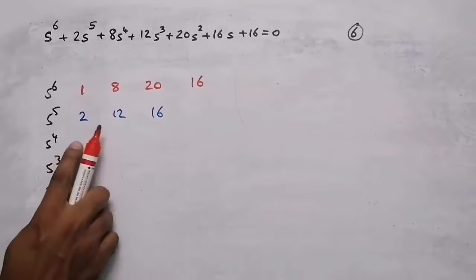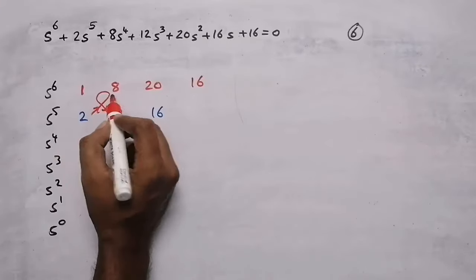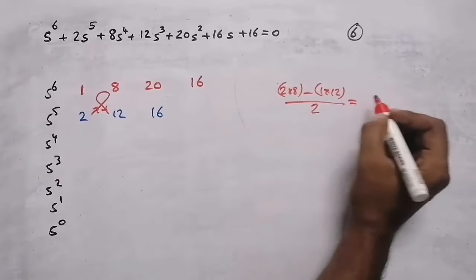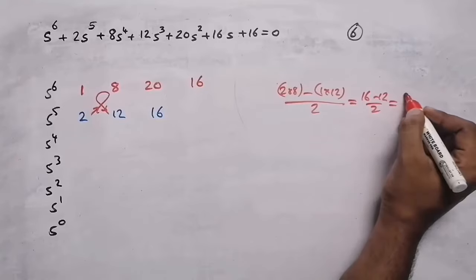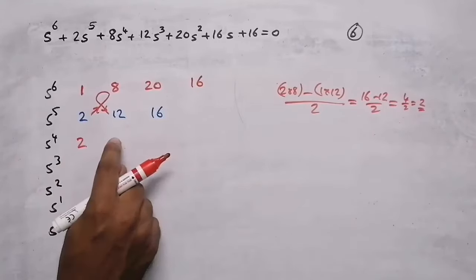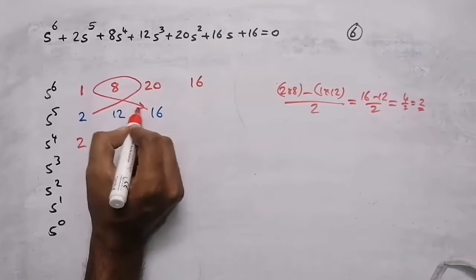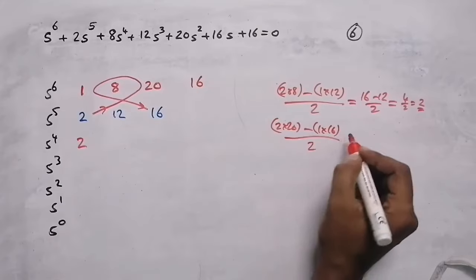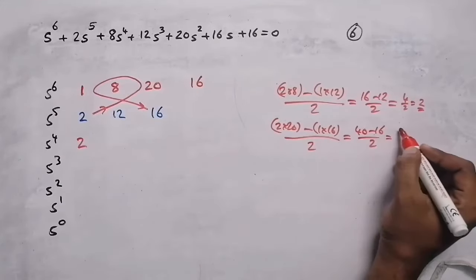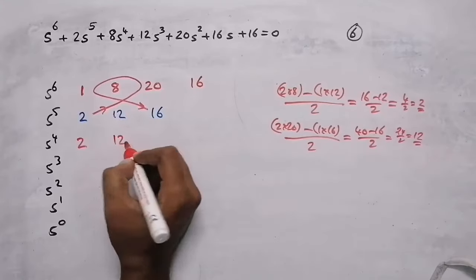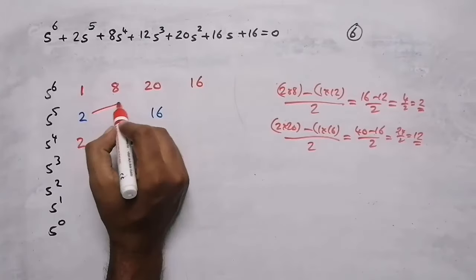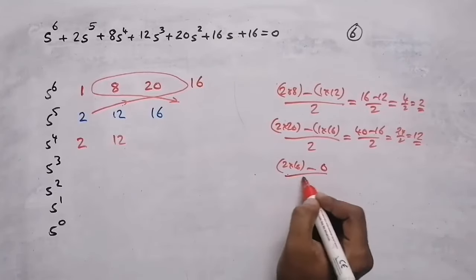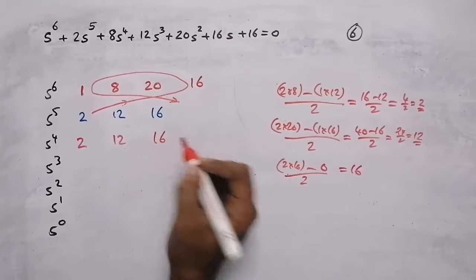To get the third row values, we use cross-multiplication. For the first element: (2×8 − 1×12) / 2 = (16−12)/2 = 2. For the next: (2×20 − 1×16) / 2 = (40−16)/2 = 12. For the last: (2×16 − 1×0) / 2 = 16.